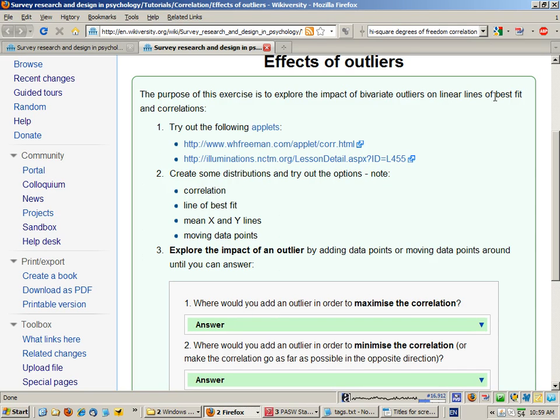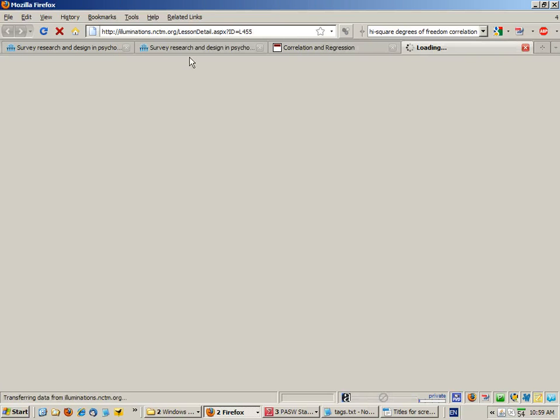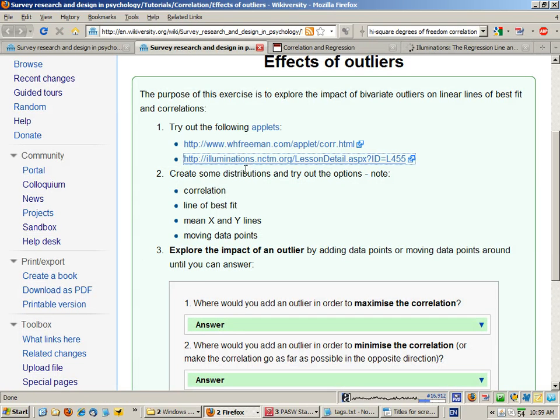Let's have a look at these two applets. What we can use these applets to do is to work out for any given correlation plot, the correlation line of best fit. We can plot the mean X and Y lines, and we can also add, remove, or move around data points.